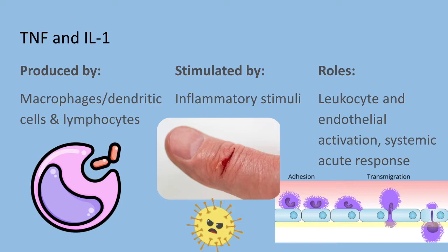Their roles in inflammation include endothelial activation, which causes increased expression of adhesion molecules in the vessels — an important step for moving white blood cells from systemic circulation into localized tissue. This endothelial activation also causes increased production of various mediators, including other cytokines and chemokines, growth factors, and increased procoagulant activity of the endothelium. These cytokines also augment the responses of neutrophils to stimuli such as bacterial endotoxins, and stimulate the microbicidal activity of macrophages, partly by inducing the production of nitric oxide.